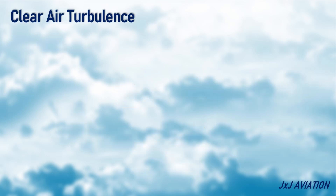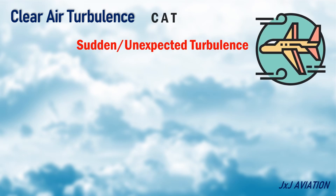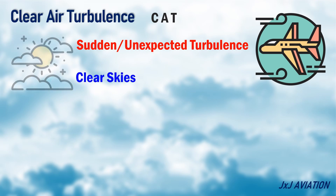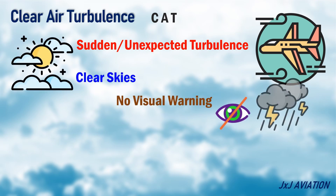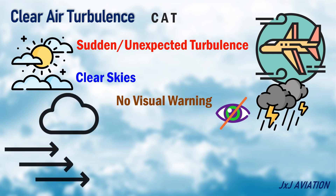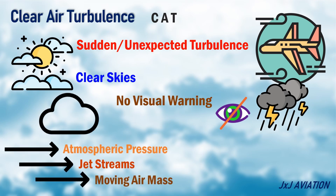Clear air turbulence, or CAT, refers to sudden, unexpected turbulence that occurs in clear skies without any visual warning, such as clouds or thunderstorms. This is caused by atmospheric pressure, jet streams, and air masses moving in different speeds and directions. It is invisible and can occur at high altitudes.